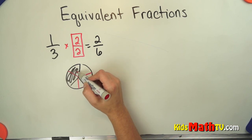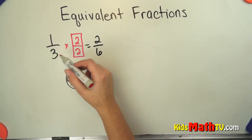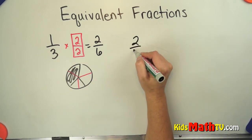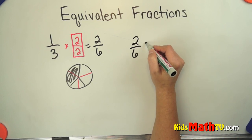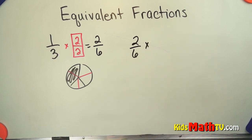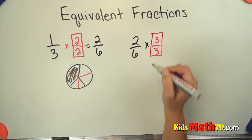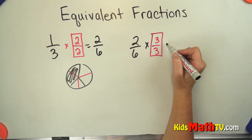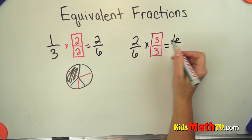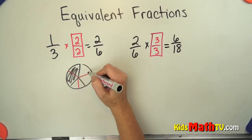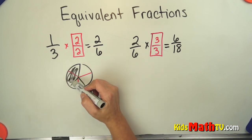So 2 sixths is the same amount of pizza as 1 third. I can take that 2 sixths and I can multiply that by a different one. Let's say we multiply that by 3 over 3. If I multiply 2 sixths times 3 over 3 I get 6 over 18. So if I were to split each of these parts up into 3 more pieces I would have 6 pieces here out of 18 total.